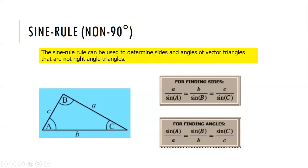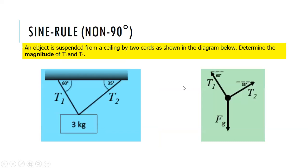We discussed the sine rule: if you put three vectors in the form of a triangle and none of the inside angles A, B, C are 90 degrees, you cannot use r² = x² + y². Instead use the sine rule: A/sin A = B/sin B = C/sin C. I usually don't use the sine rule unless specifically asked — I don't recall exam questions requiring it — but if you struggle finding components, you might use it.